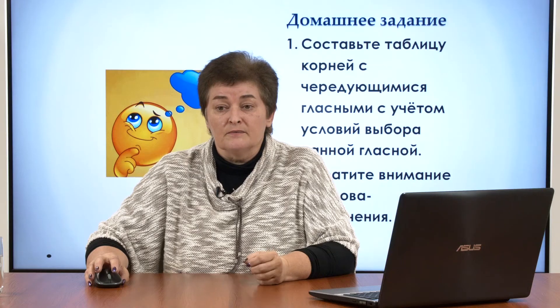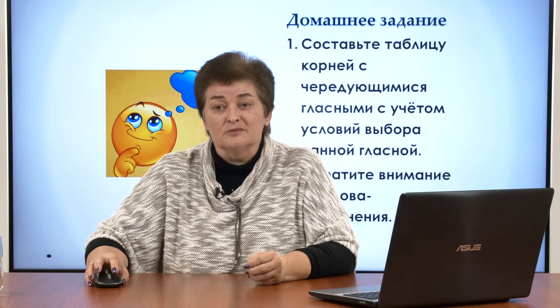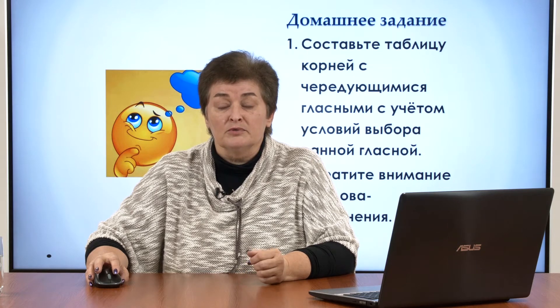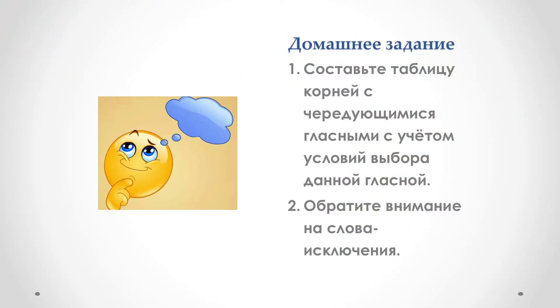Привет, друзья! Сегодня мы проводим третье занятие на тему «Безударное гласное в корне слова». Оно будет посвящено разбору задания 9 ЕГЭ по русскому языку. Но начать я хочу с домашнего задания. Надеюсь, вы все с ним справились. Обратили внимание на таблицу и обязательно включили в неё слова-исключения.